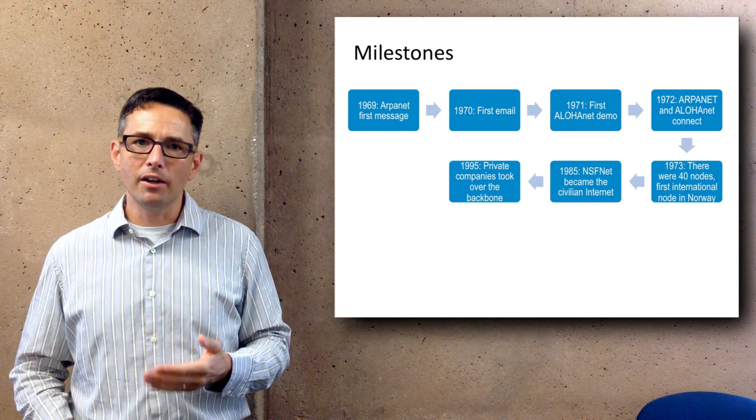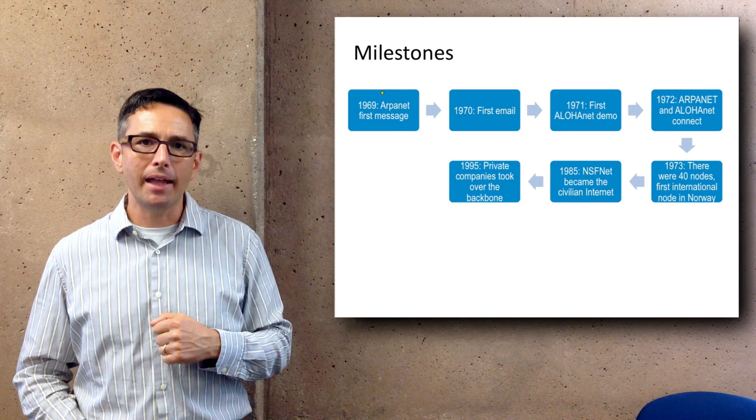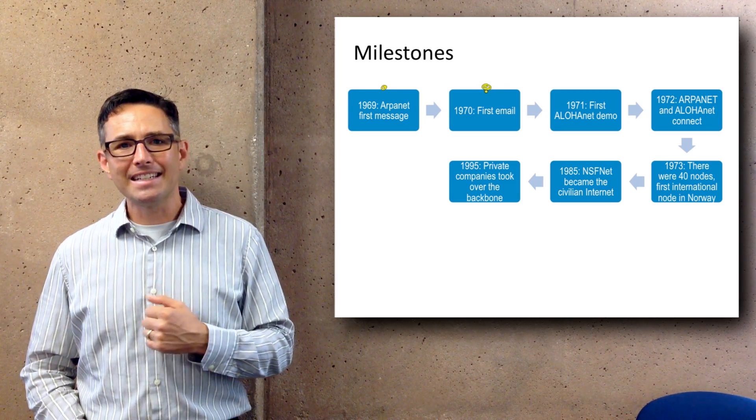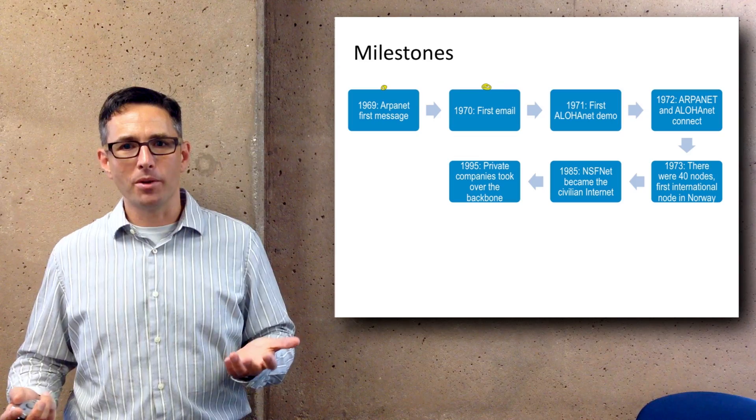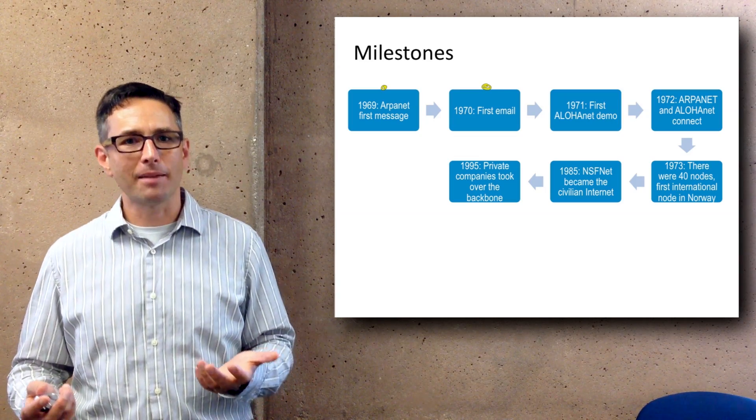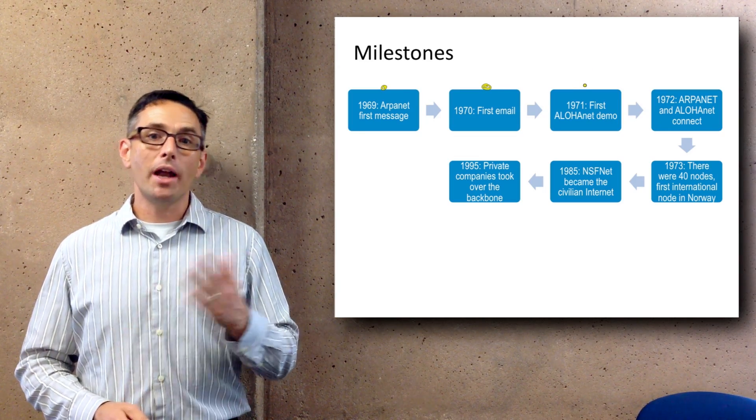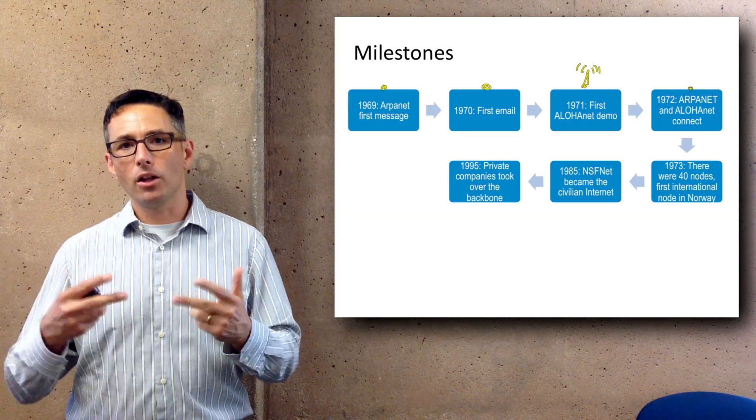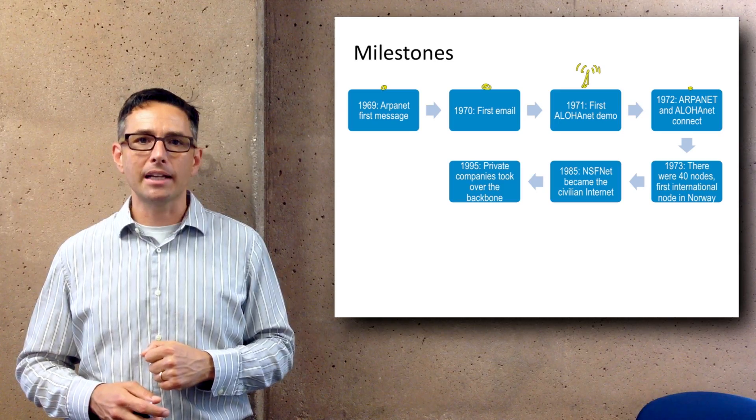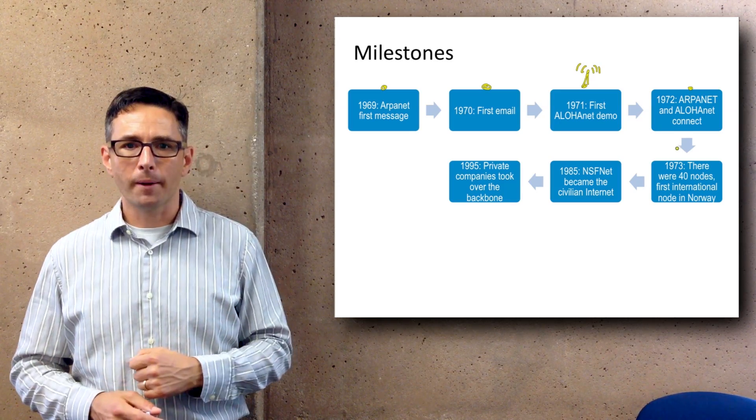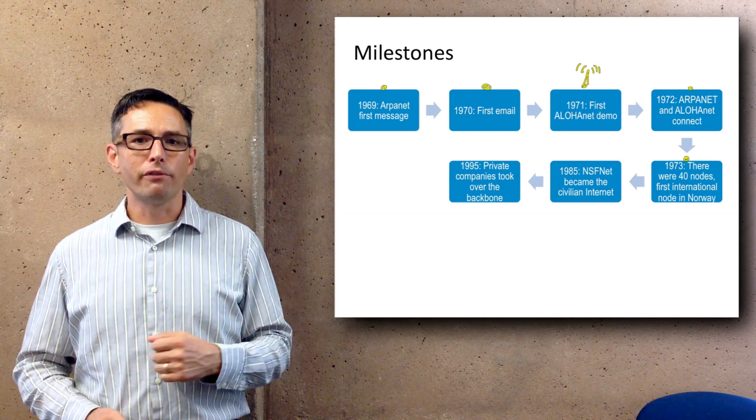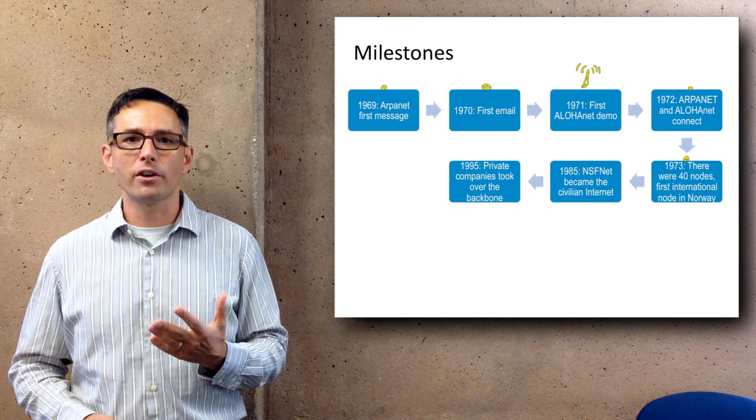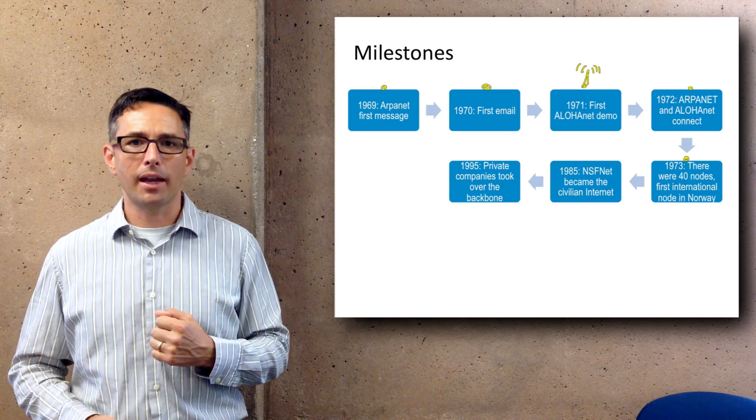Key milestones in the invention of the internet: In 1969, ARPANET sent the first message on a landline-based system. In 1970, the first email was sent—of course, life has never been the same since. In 1971, in parallel, the first Aloha Net demo was made. Then in 1972, ARPANET and Aloha Net came together and were connected to form a joint network. By 1973, there were 40 nodes in the entire ARPANET network, growing slowly but steadily, and included the first international node, which was located in Norway.